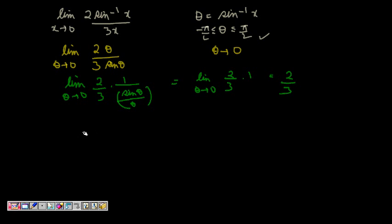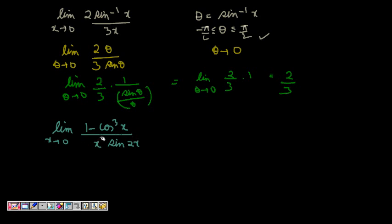Next, we will look at more problems so you really get how to solve limits of trigonometric functions. The next problem is: limit of (1 - cos³x)/(x·sin2x) as x tends to zero. First, substitute x = 0: the denominator becomes zero and the numerator becomes zero, giving the 0/0 indeterminate form. So we need to simplify and get common factors out from numerator and denominator.